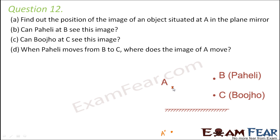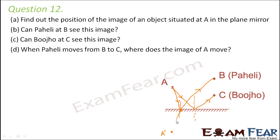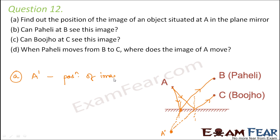Let's verify using ray diagrams. A ray of light falling on the mirror — this is the normal, this is the incident ray, and this is the reflected ray. Similarly, another ray falls and gets reflected. If we extend these reflected rays, they meet at a point — that is the image. We call it A-dash, where the distance of A from the mirror equals the distance of A-dash from the mirror.